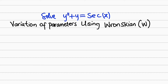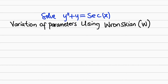Hello, good morning viewers. In this tutorial we are going to find a solution to a second order linear non-homogeneous differential equation using variation of parameters, but we are going to apply the idea of the Wronskian. I will show you step by step how it works. The general solution will be of the form y(x) = y_h + y_p, where y_h is the solution to the homogeneous differential equation, obtained by setting the right-hand side equal to zero.